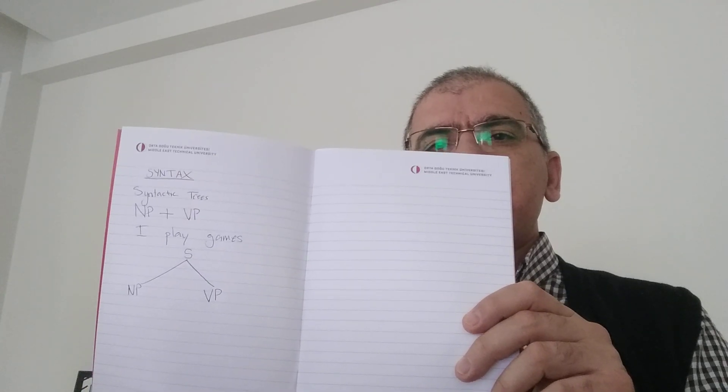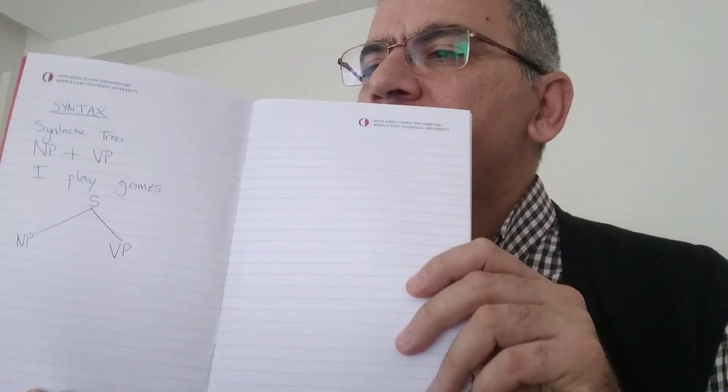Let me analyze a very simple sentence: I play games. When we say I play games, we put a big S at the top, which means sentence, and divide it into two. The first division is noun phrase, the second division is verb phrase.